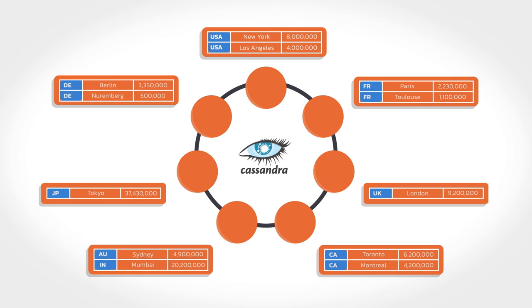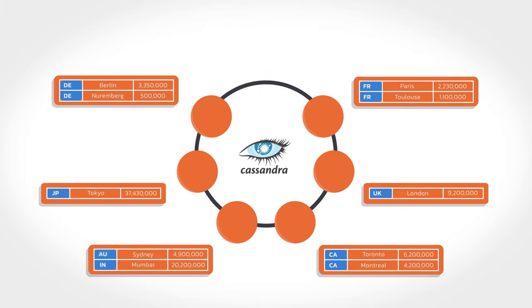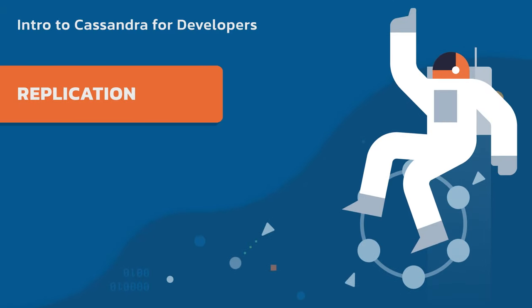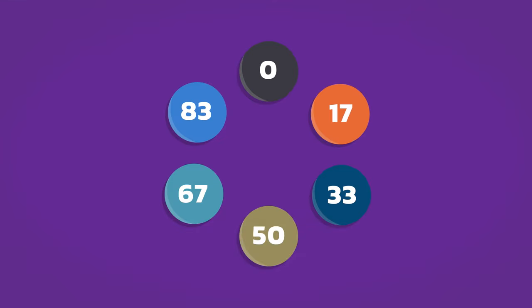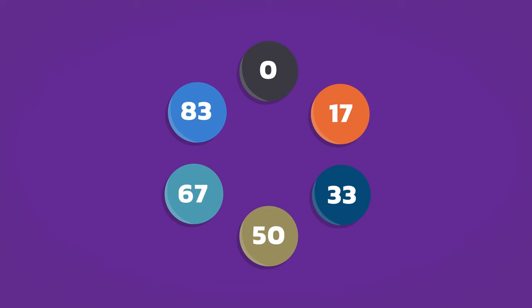Looking at this picture, some of you might be thinking: what happens if I lose the node that contains the USA partition? Do I lose my data? Each node has a number assigned to it — these are called partition tokens, and every node is assigned a set of tokens they own. The node labeled zero owns tokens 84 through zero, then the next node owns one through 17, and so on around the ring. When you add a partition key to a table, that value is automatically hashed out to a token value. That is how Cassandra knows where to store and retrieve your data. Think of the partition key as the address of your data.